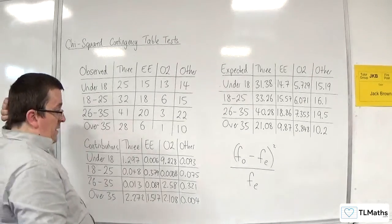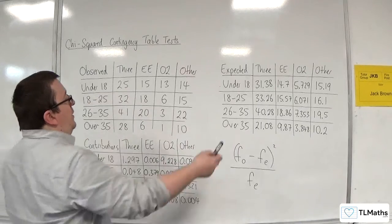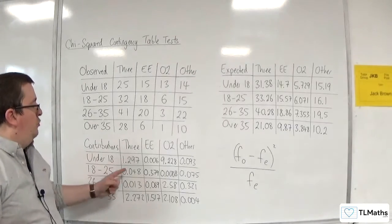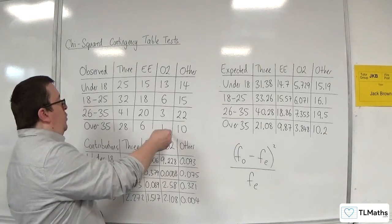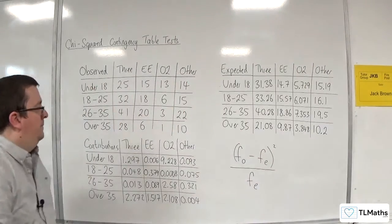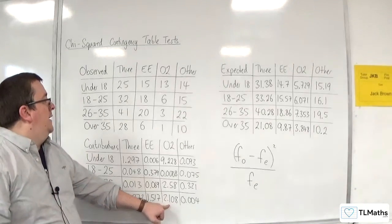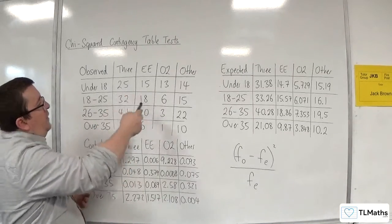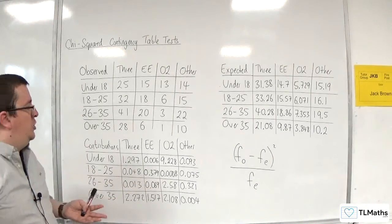So we can actually see that looking at the table that I've got. For example, we look at the under 18s on the 3 contract. We've got 25 were observed, 31.38 were expected. The contribution is 1.297. So that is the contribution to the test statistic. Whereas, if we look at the one person that was recorded who was over 35, who had an O2 contract, their expected frequency was 3.848. So the contribution calculation gets us 2.108. So actually, that difference there is having a bigger effect on our contributions than the 25 versus 31.38 that we've got up there, which doesn't quite seem right.